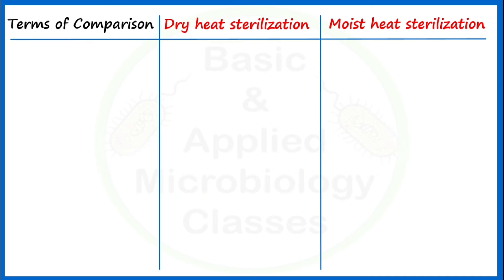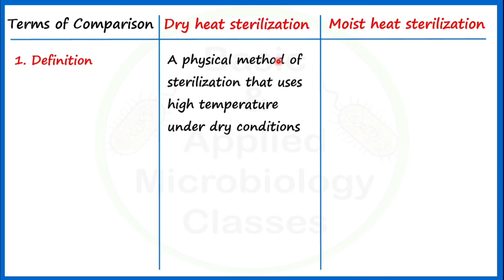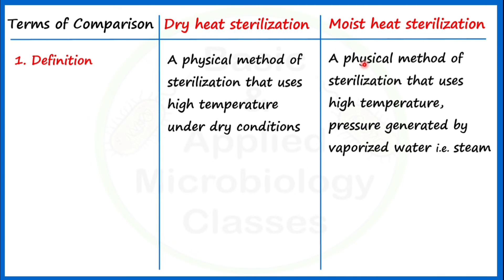The first point of difference is definition. Dry heat sterilization is a physical method of sterilization that uses high temperature under dry conditions. Moist heat sterilization is also a physical method of sterilization, but it uses high temperature and pressure generated by vaporized water, that is steam, to sterilize different types of materials.